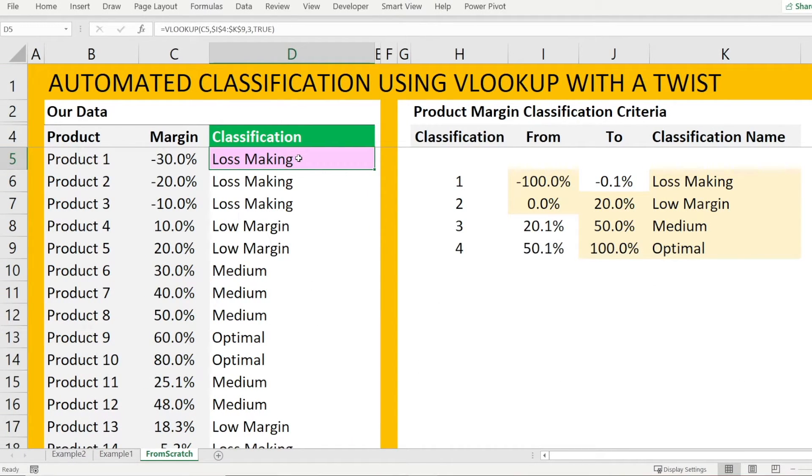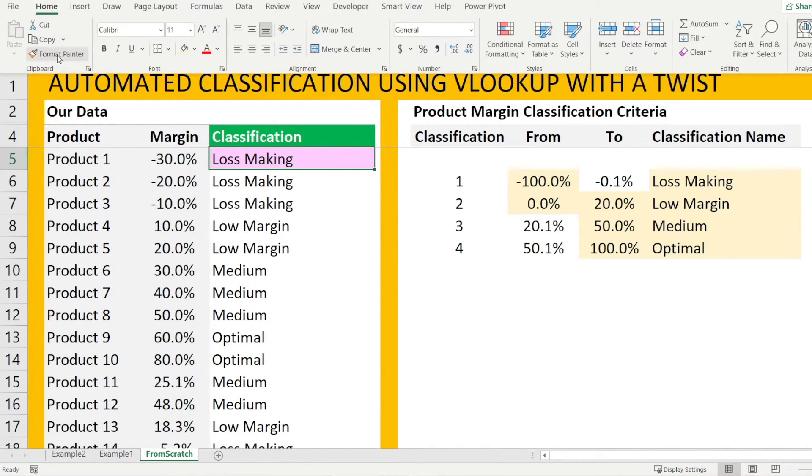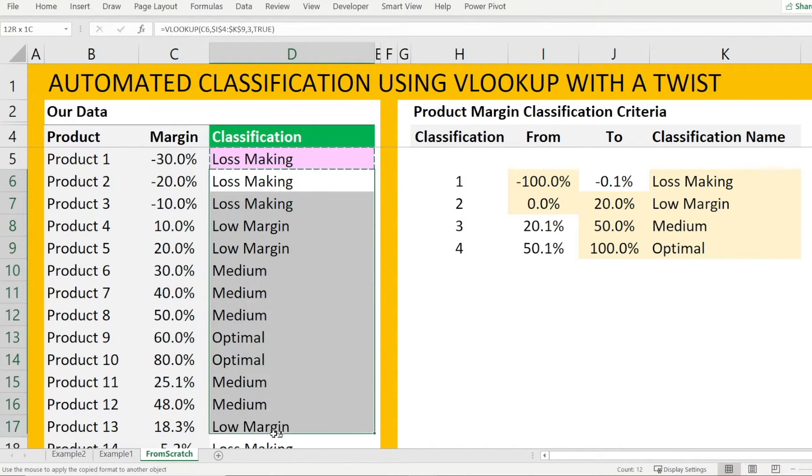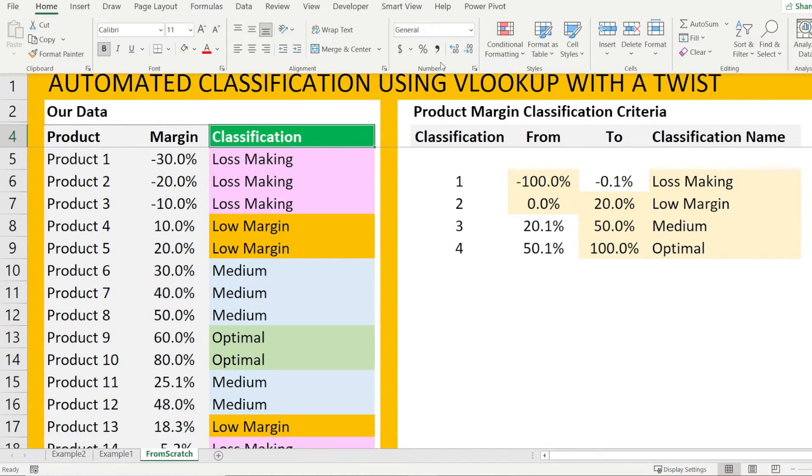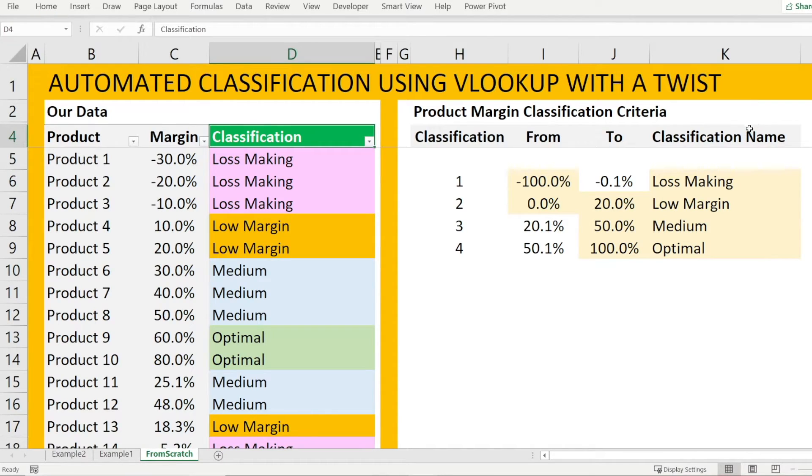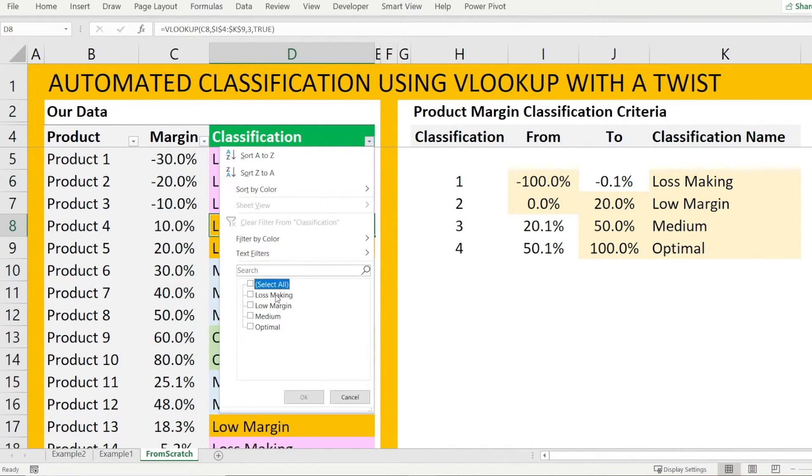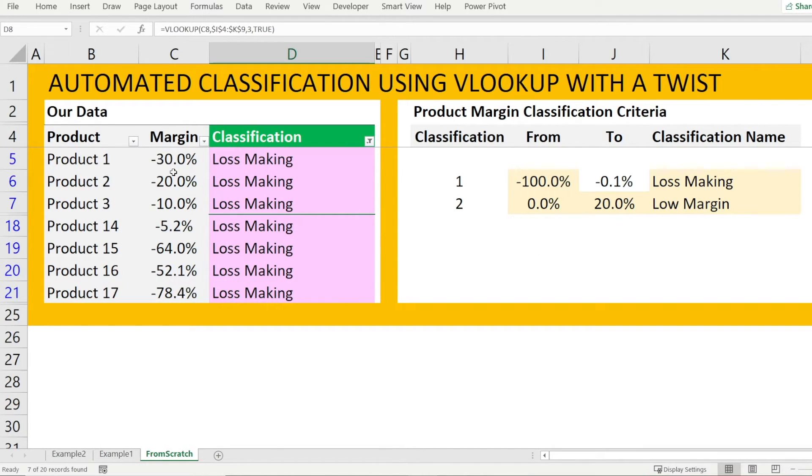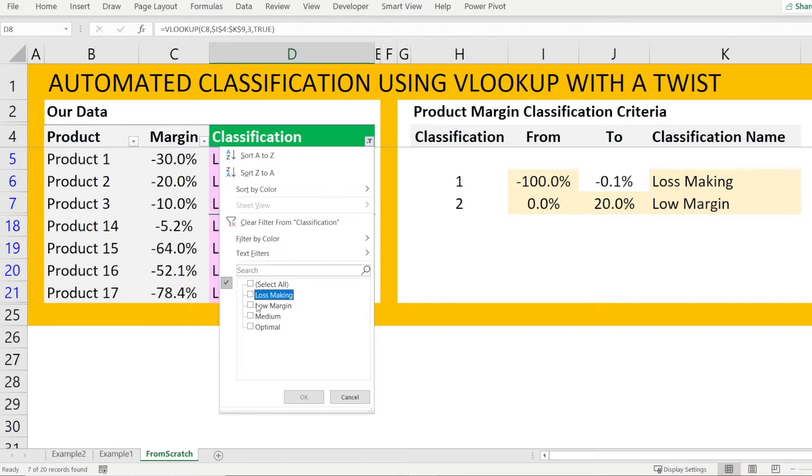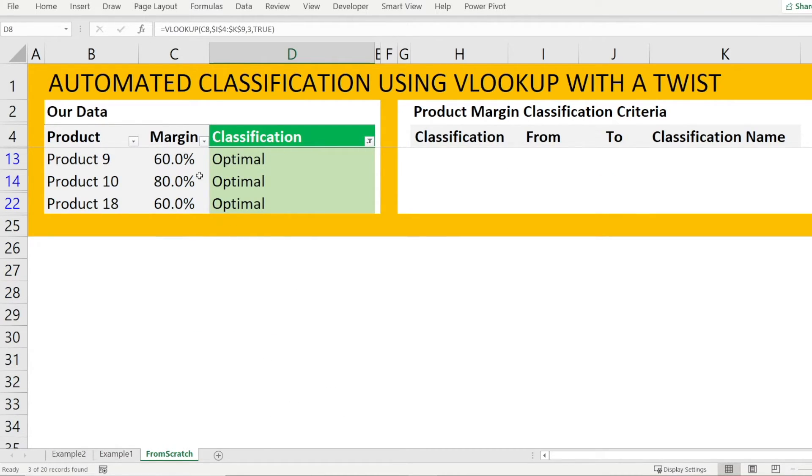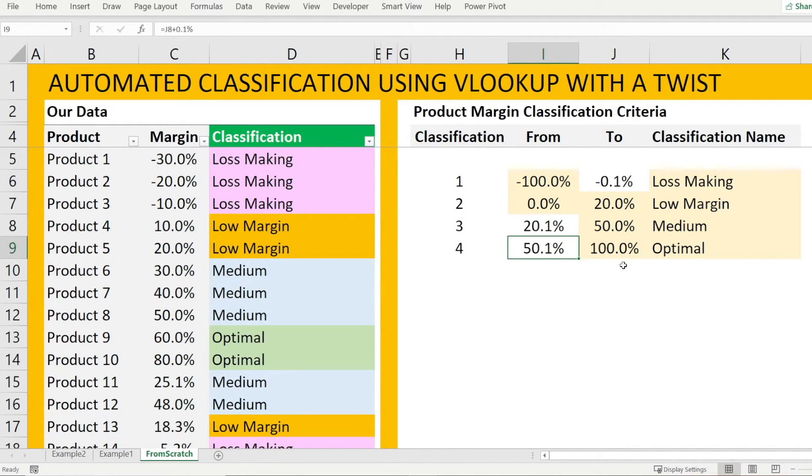Now, we've done it on the first cell. So hit home format painter, so that we can replicate that formatting, that conditional formatting on everything. And let's do filter that we can check. Loss making. All right. All with margin less than zero. Perfect. Let's check optimal. Optimal is 60 and above. Let's check our table. Yep. We said 50 and above. And when it's 50, it's medium. So let's check whether if we change that, everything is changing dynamically. And yes, it is happening. So perfect. And we are done.